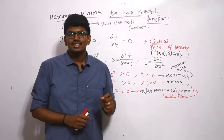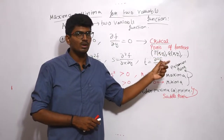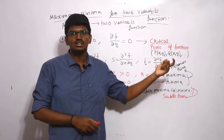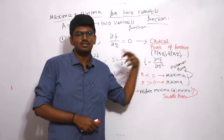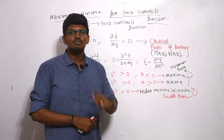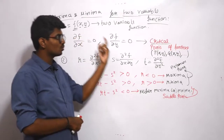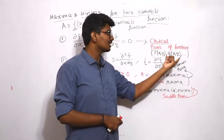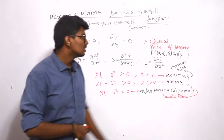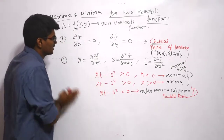Here the critical point is going to be a pair — one value for x and one for y, for example (1,2), (2,3), (3,4), etc. There will be two values: one corresponds to x and one to y. So the first step is to differentiate, equate to 0, and find the critical points.